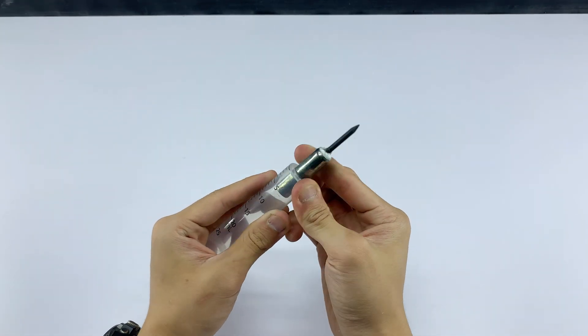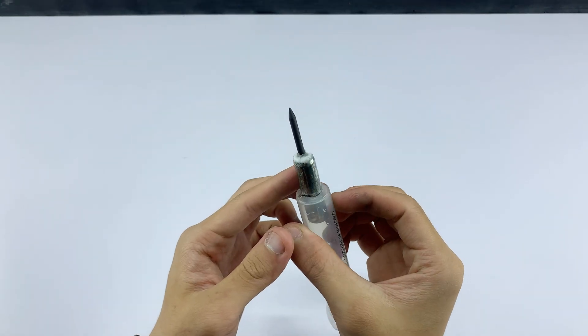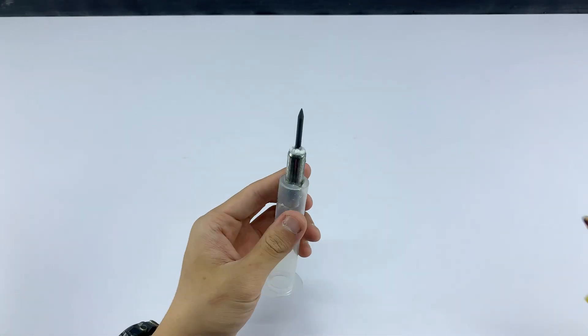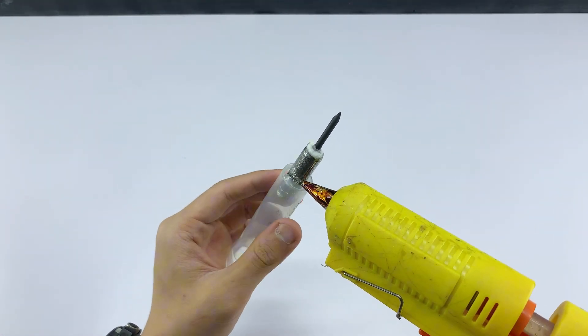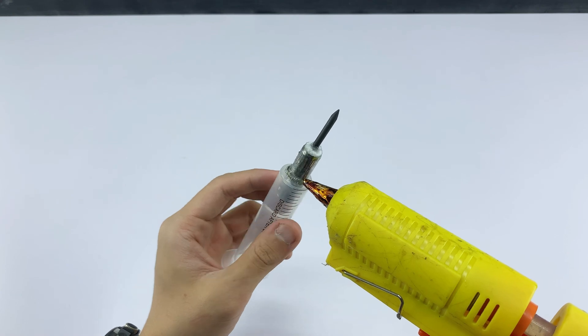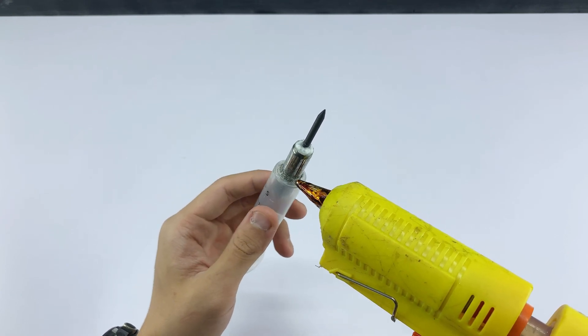To turn this into a portable soldering iron, I'm going to attach a hot glue tip to the end of the carbon rod. I apply hot glue around the base of the tip, then firmly press it onto the pointed carbon rod. This provides insulation and a proper tip for soldering.